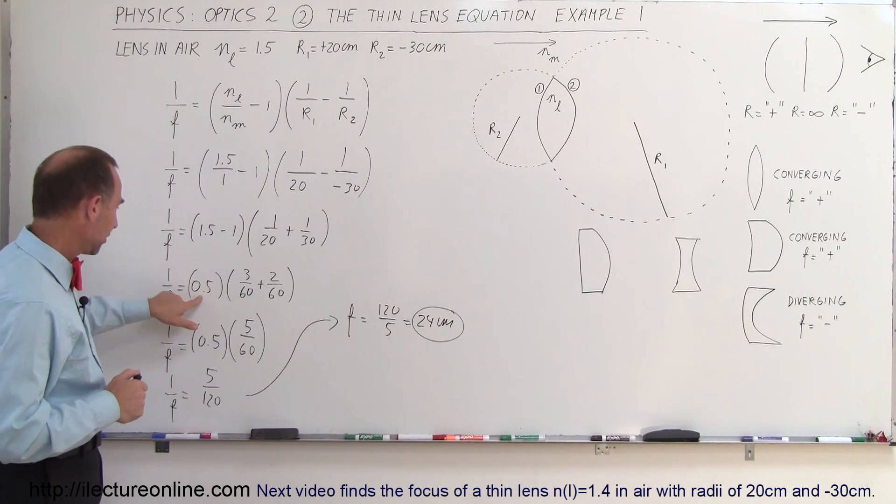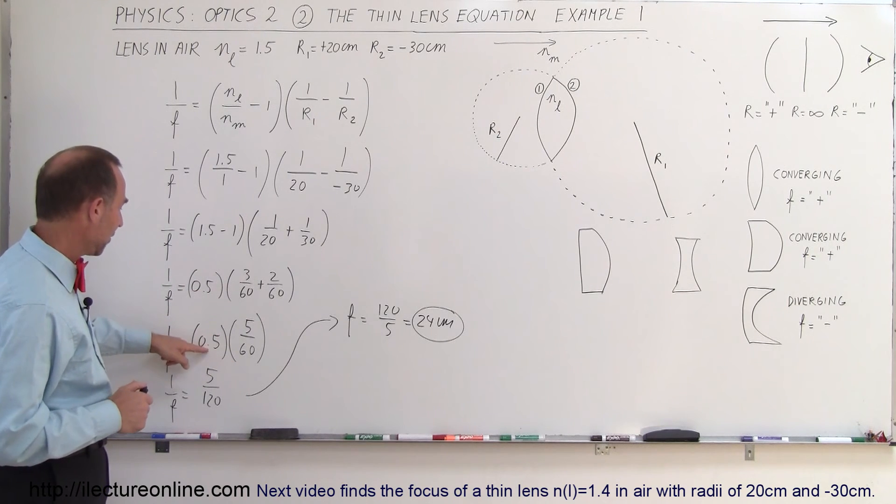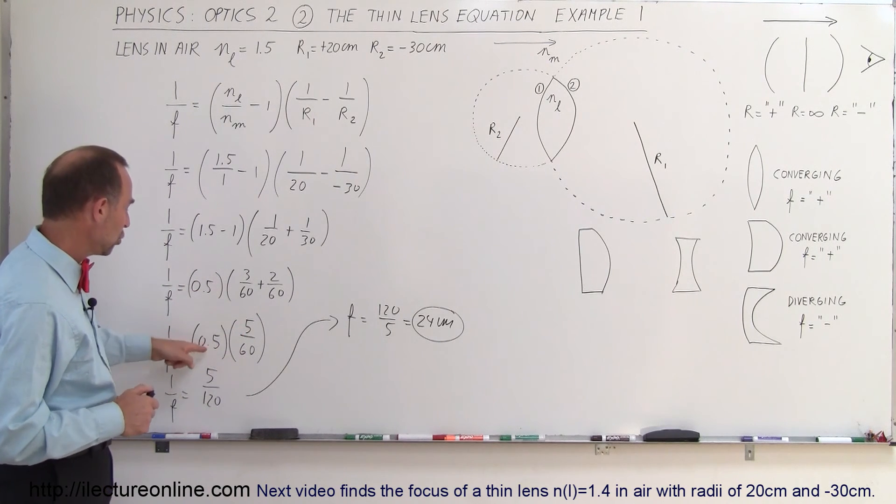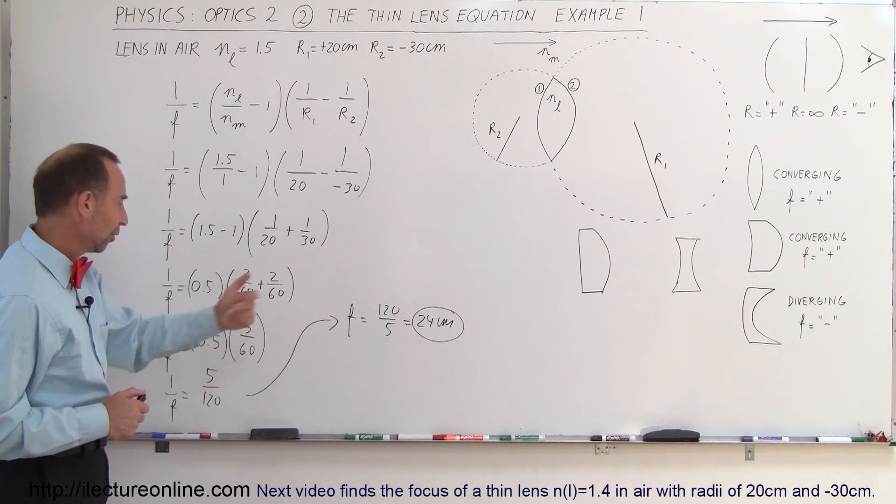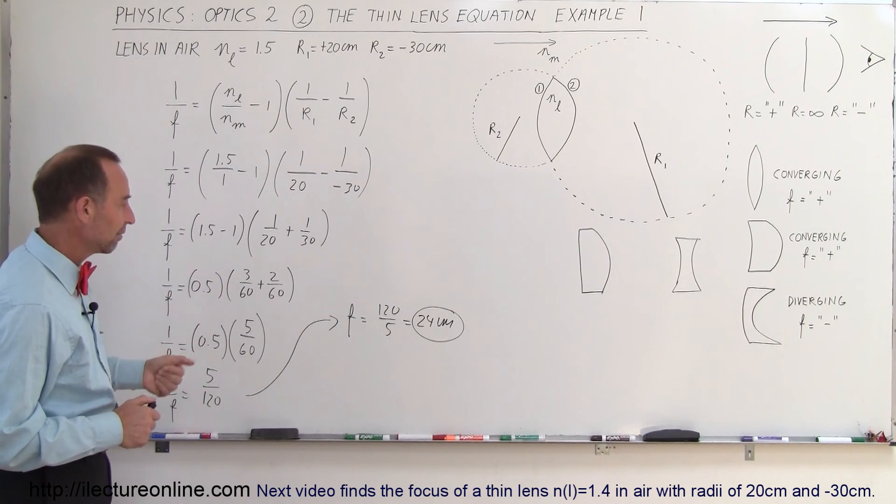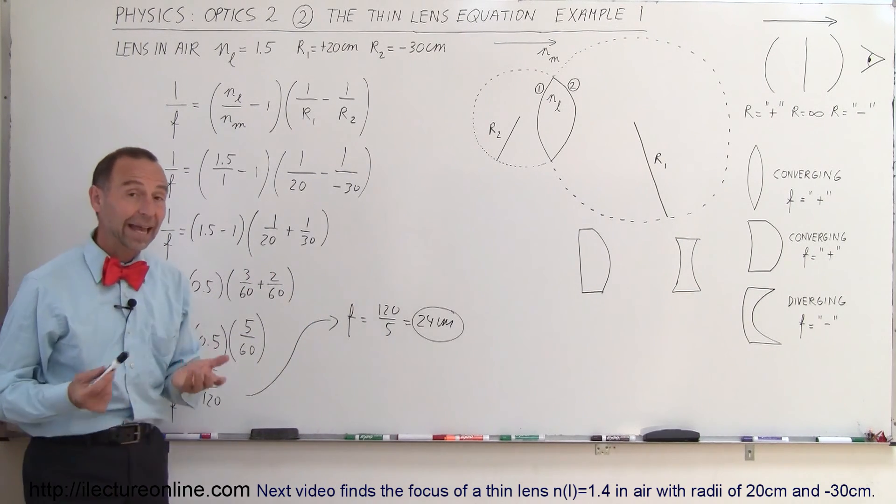Let me quickly check the math here. We have 5 over 60. If I multiply top and bottom by 2, that becomes 1, and that becomes 120. So f will be the inverse of that: 120 divided by 5, which is 24 centimeters. And that is the answer.